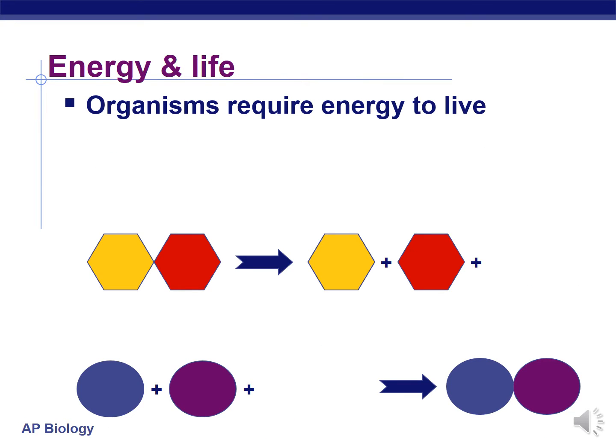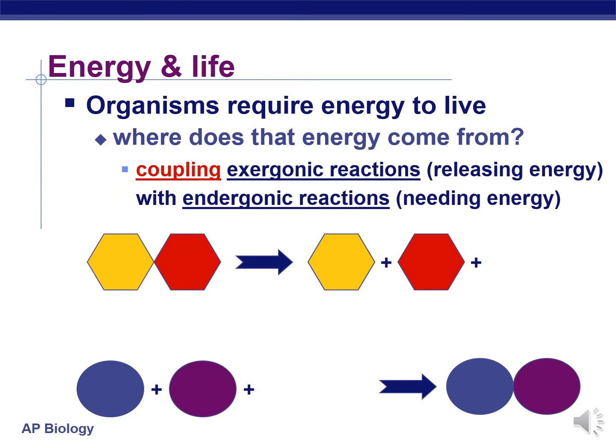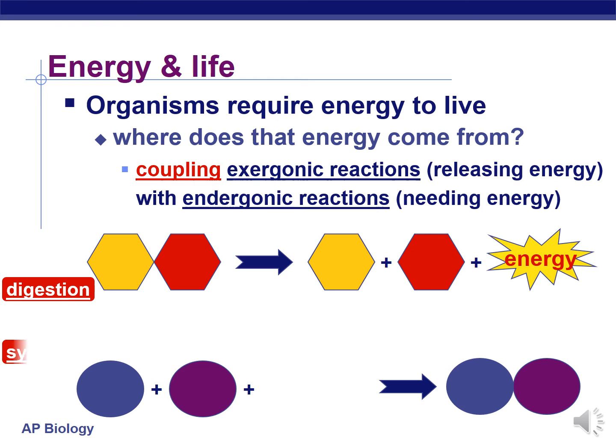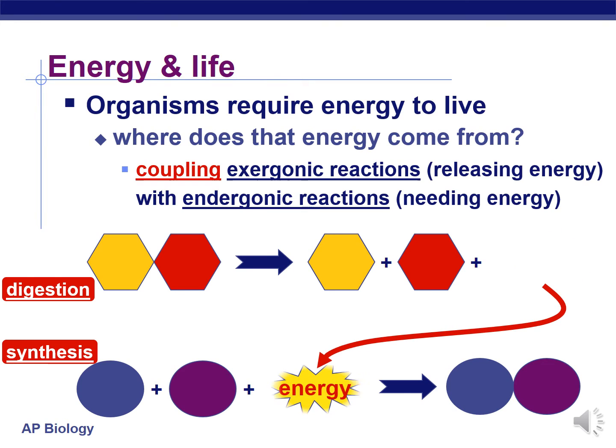So if many of these reactions require energy, where does the energy come from? It's easy to see that catabolic processes can go on because those produce energy. But how do we get those anabolic processes — the ones that are synthetic — to go on, because they require the input of energy? Well, what we do is we couple reactions. We stick them together so that the energy released from digestion can then be transferred to the chemical reactions that put molecules together — the synthetic chemical reactions.